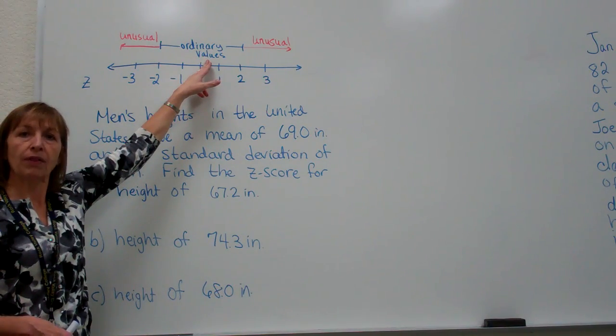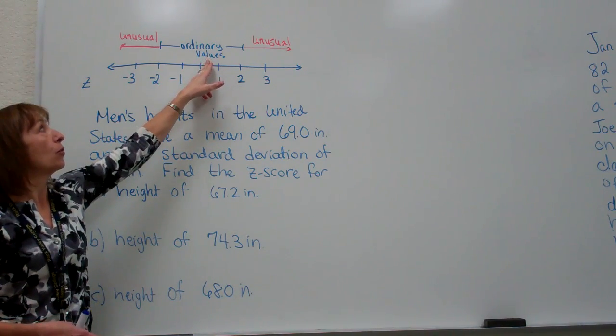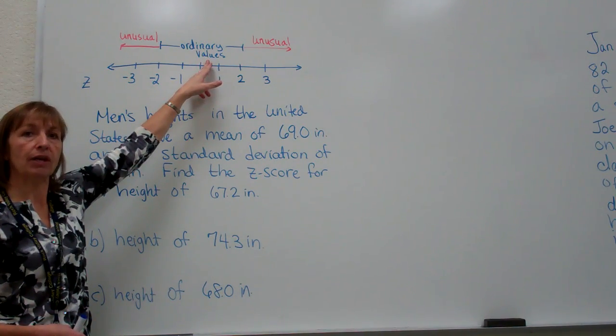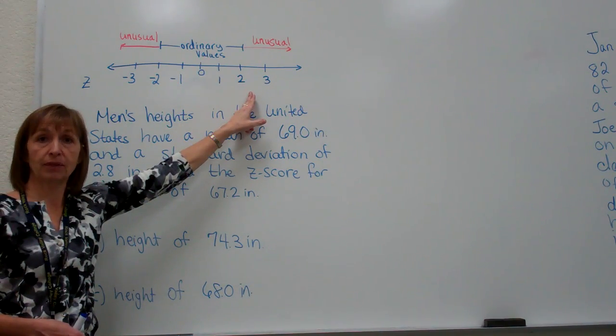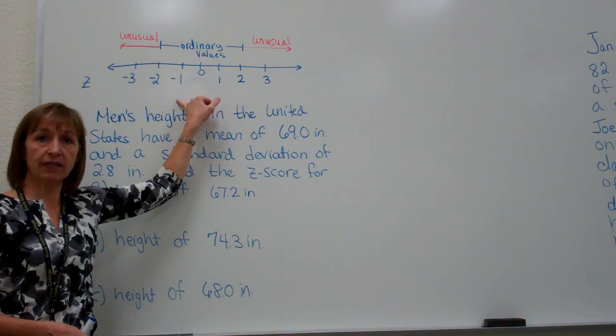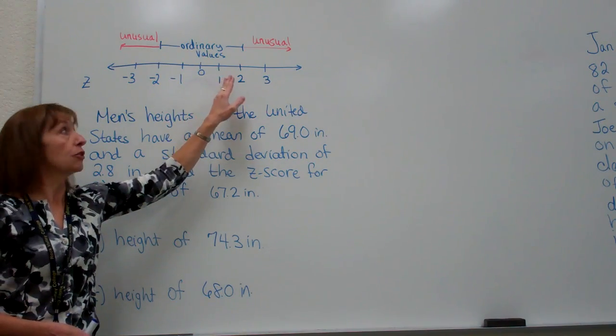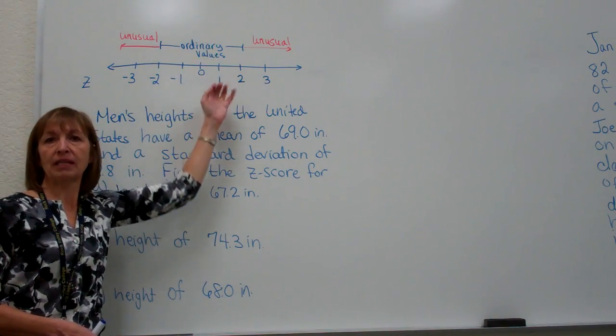If we have an ordinary data value, one that is what the majority of the distribution has, those will have z-scores that are anywhere between negative 2 to positive 2. So numbers that fall from the span of two standard deviations below the mean to two standard deviations above the mean are pretty much anticipated data values.